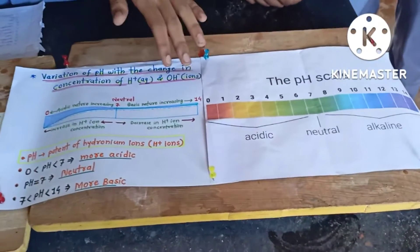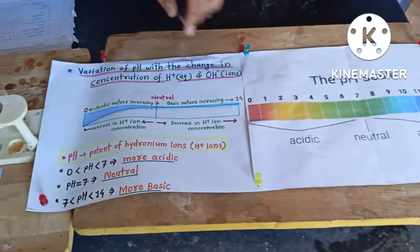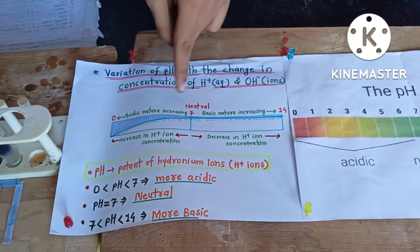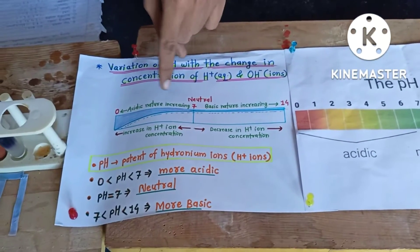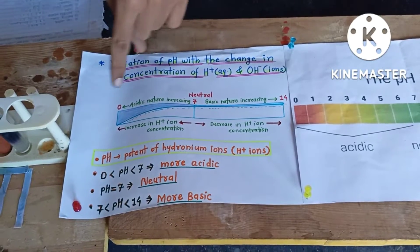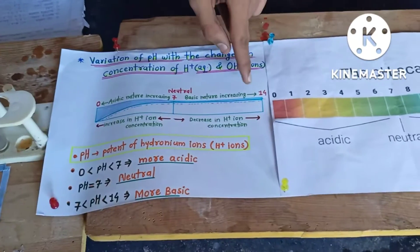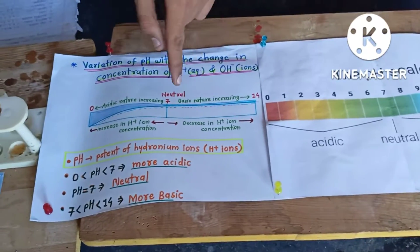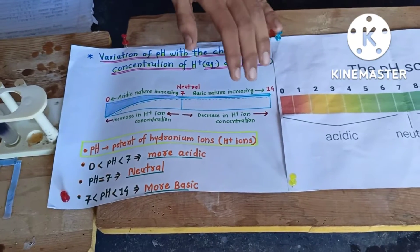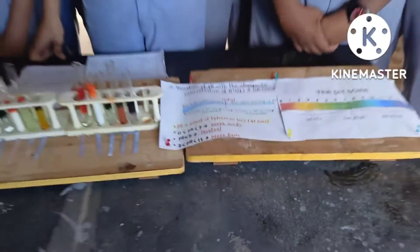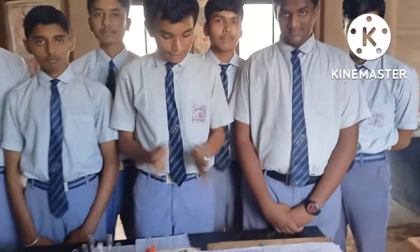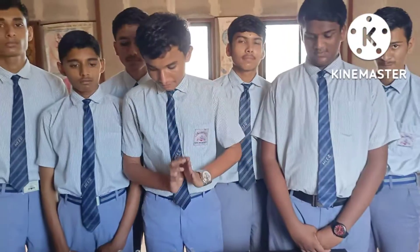pH ranges between 0 to 14. From 7 to 0, the acidity of a substance increases. From 7 to 14, the basicity of a substance increases. Now let's begin our activity.